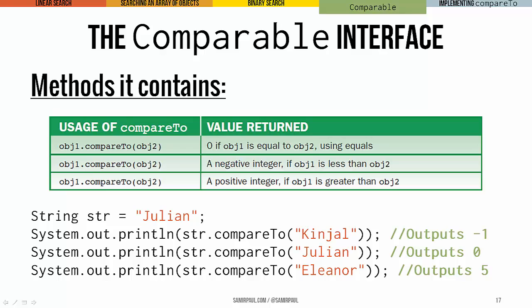Now the string class implements the comparable interface. And so the output that we're looking at here is sensible. I can take a string Julian and I can compare it to Kinjal, to Julian itself, and to Eleanor. And in this case, you can see what the outputs will be. Comparing it to Kinjal returns negative one. Looks like Julian is less than Kinjal. I can compare it to the string literal Julian, and that's going to return zero because those are actually both identical. And I can also compare it to the string Eleanor. And in this case, that will return five because Julian apparently is greater than Eleanor.